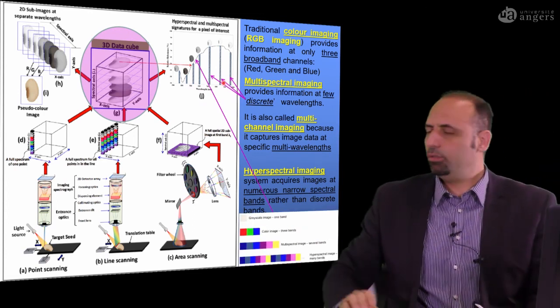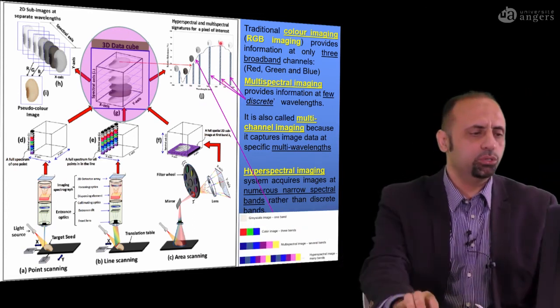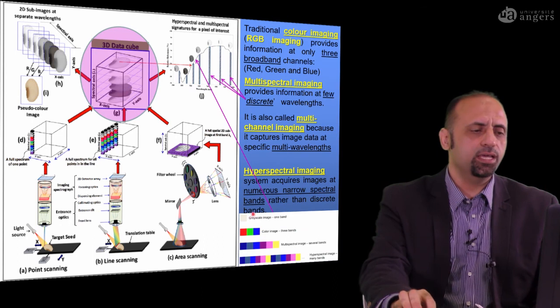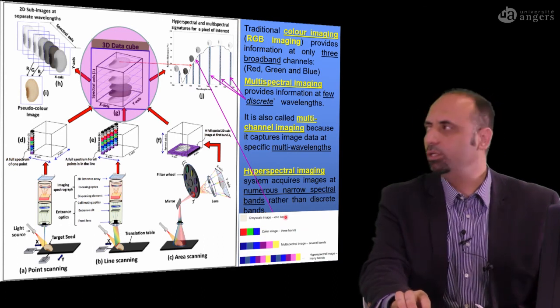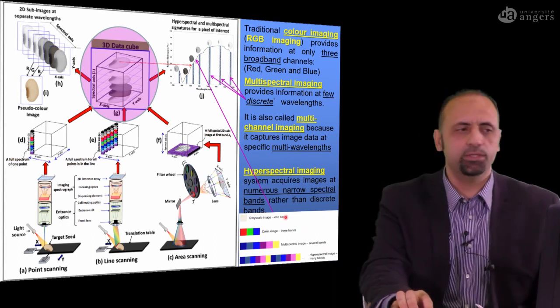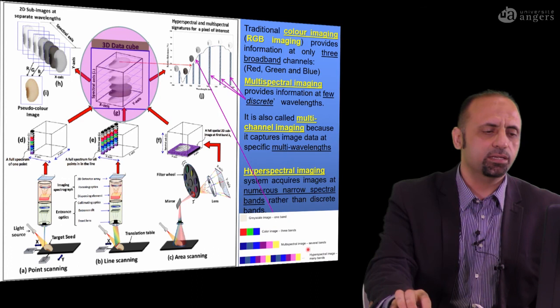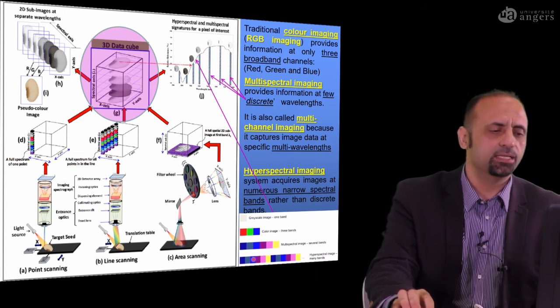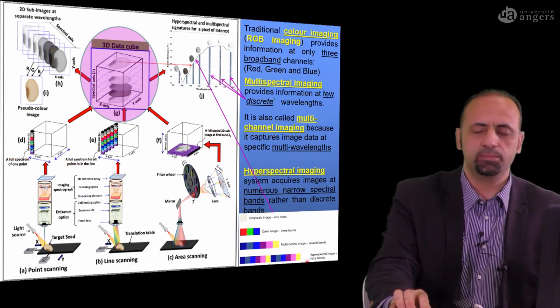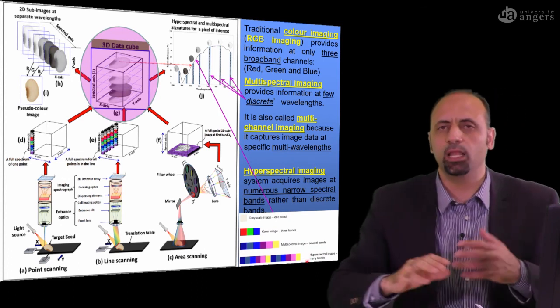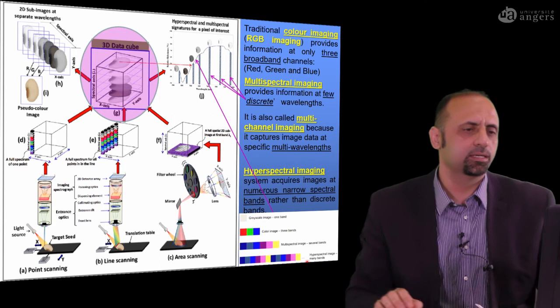To summarize: a gray image has only one band; a color image has three bands; multispectral imaging gives several bands; and hyperspectral imaging provides a large number of bands.